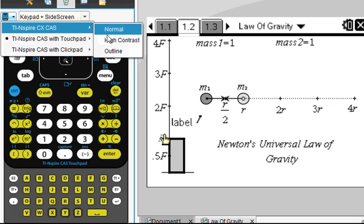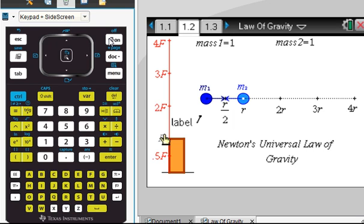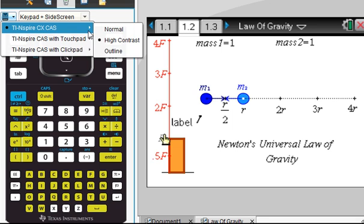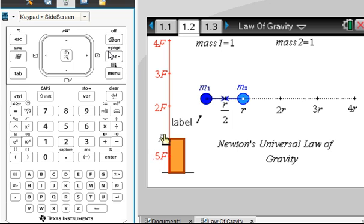And besides the high contrast, you can also get it with an outline, but that's not a very tasty flavor in my opinion unless you wanted to print something out.